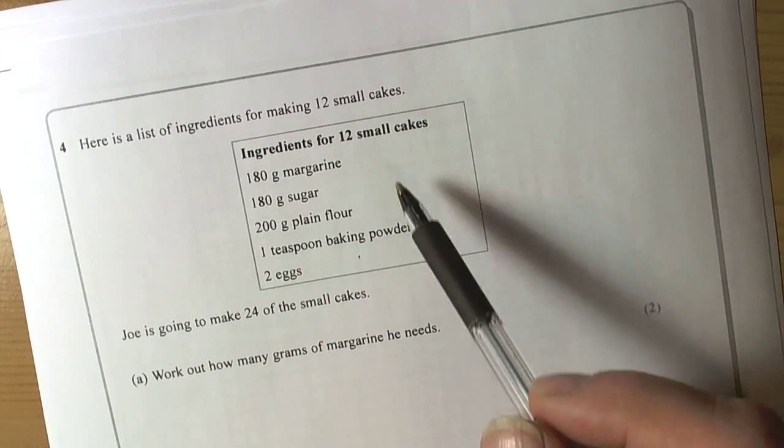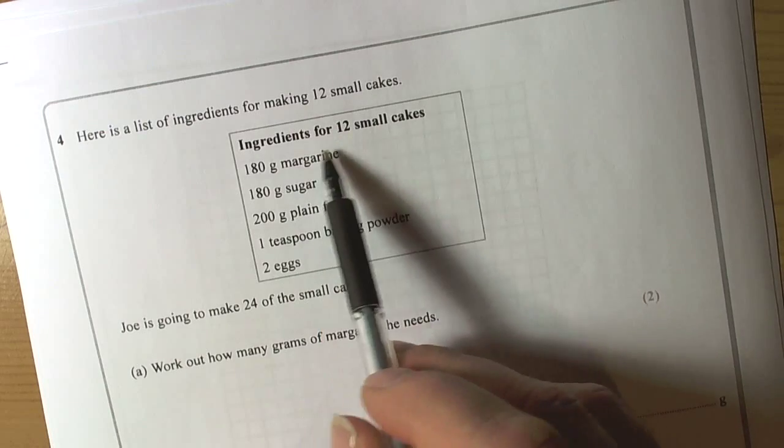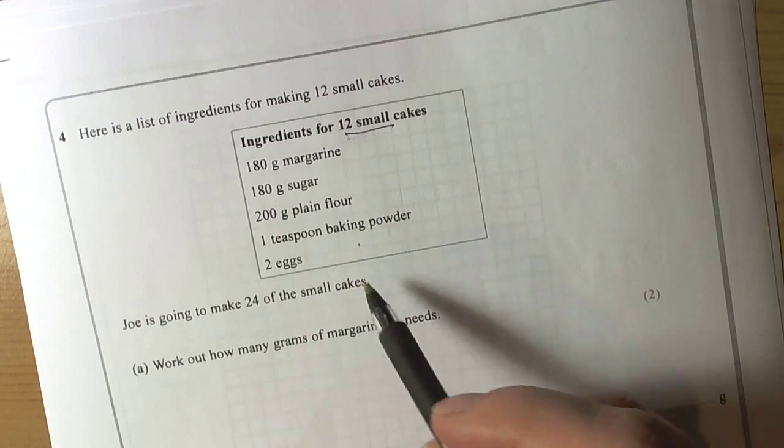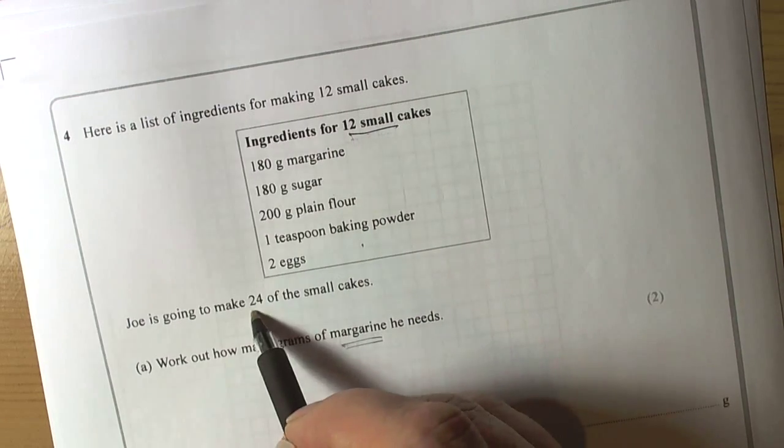So we have the classic recipe type question here. They are giving us a list of ingredients for 12 cakes and they want you to work out how many grams of margarine needed for making 24 cakes.